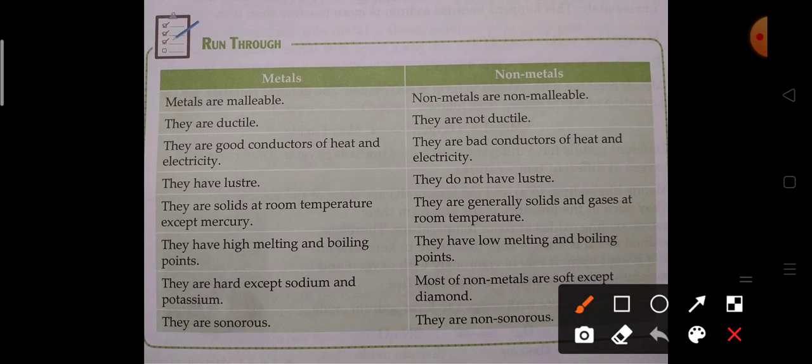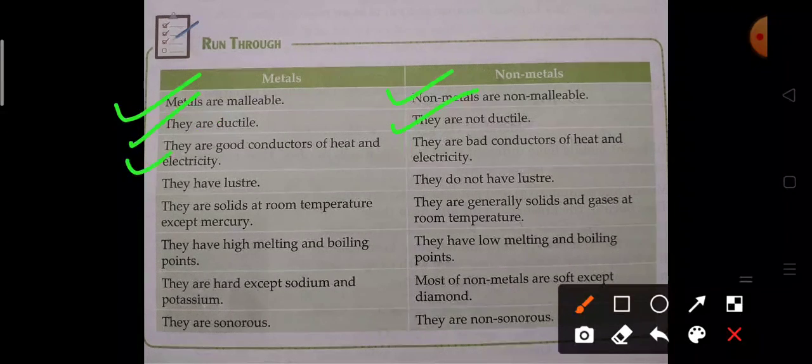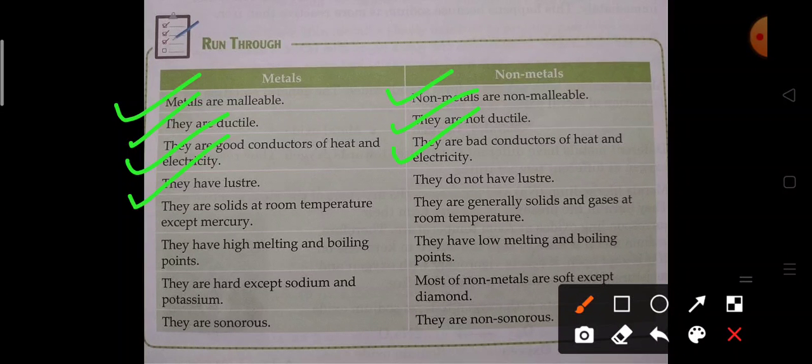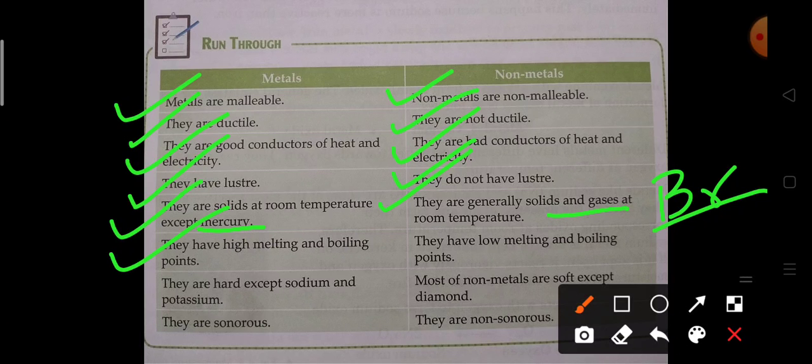Now we conclude them in a simple table form. Metals are malleable, non-metals are non-malleable. Metals are ductile, non-metals are non-ductile. They conduct heat and electricity, non-metals don't conduct. They are lustrous or shiny, non-metals are not. They are solid at room temperature except mercury. Non-metals are generally solid and gases, but bromine is liquid at room temperature. Metals have high melting and boiling points except potassium, sodium and mercury. Non-metals have low melting and boiling points except diamond and graphite. Metals are sonorous, non-metals are non-sonorous.